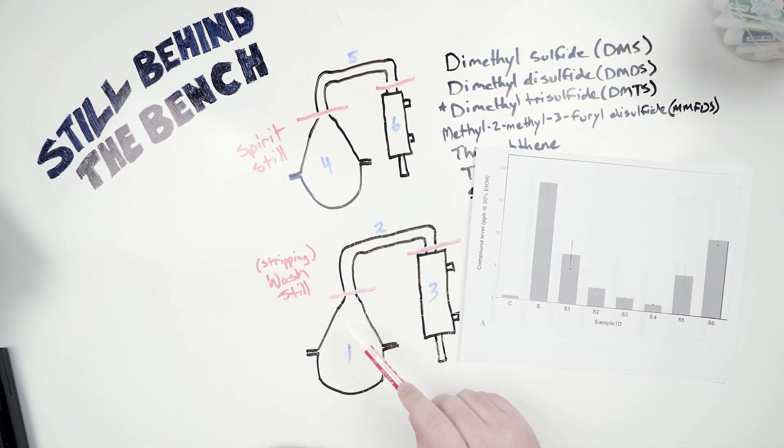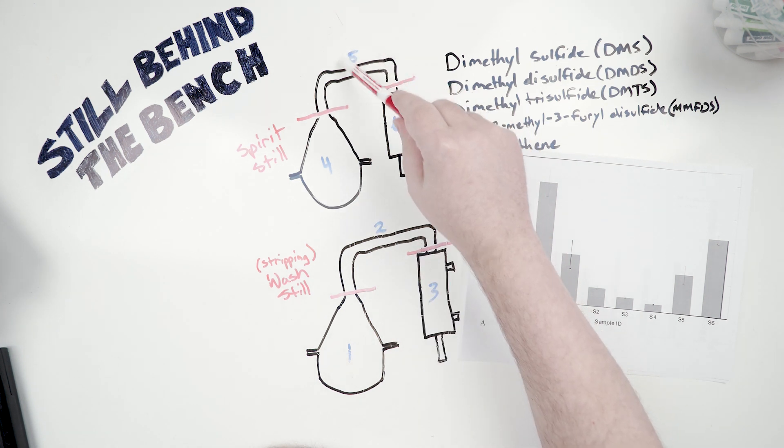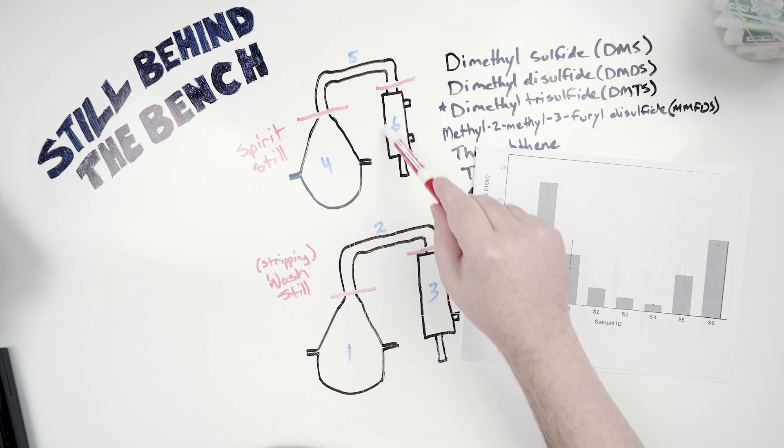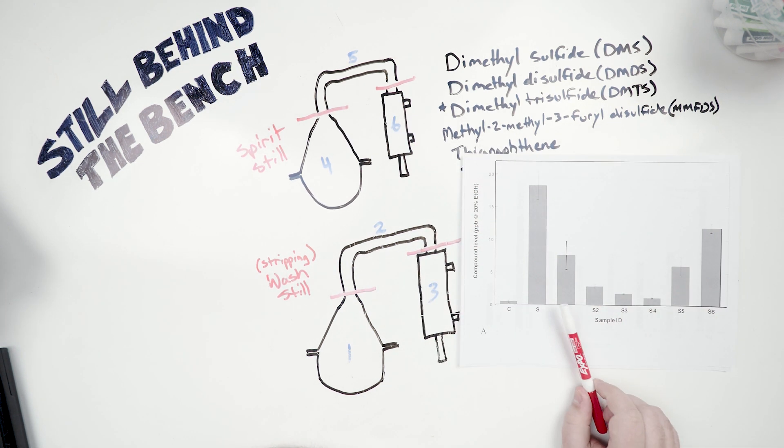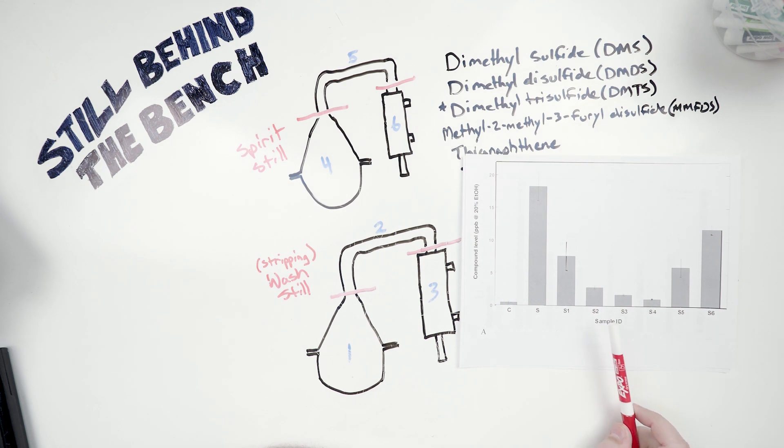So S1 is going to be the wash still pot. S2 is going to be the wash still line arm. S3 is the wash still condenser, and the spirit still pot is S4. Spirit still line arm is S5, and then spirit still condenser is S6. So you can see that the greatest changes are when you make the wash still line arm, the wash still condenser, or the spirit still boiler copper. They're all pretty significant changes. Not as good as having an all copper setup, but if you're going to have a still that is only part copper, making it these three parts is going to have the biggest impact.